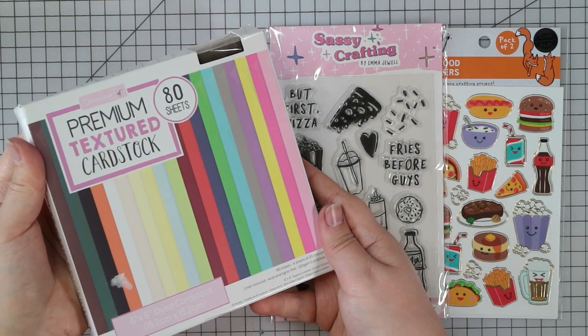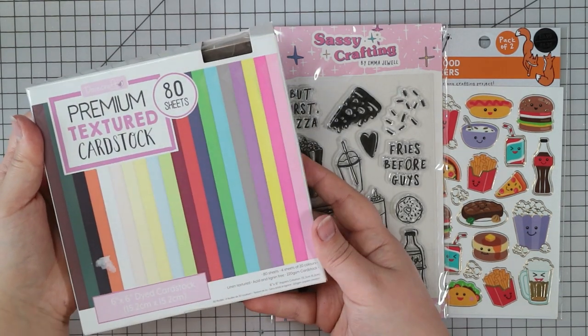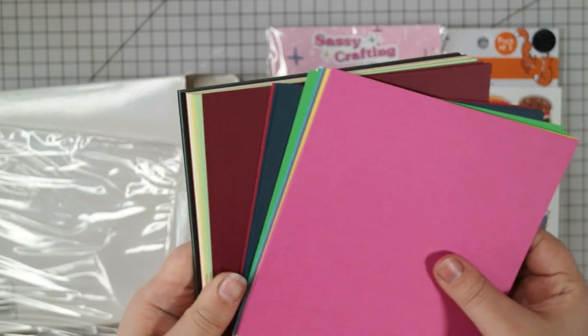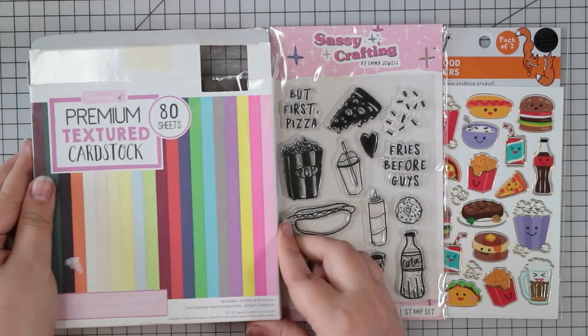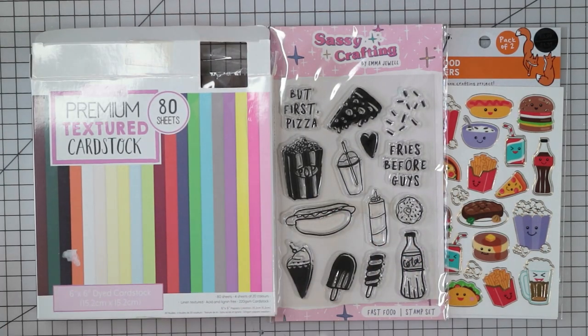And then for cardstock I decided to not go for pattern paper and I went for this premium textured cardstock pack from Dovecraft. There's a whole bunch of different colors in here and they're all quite thick cardstock with a nice texture on, so I thought that was a nice one to use from my stash.